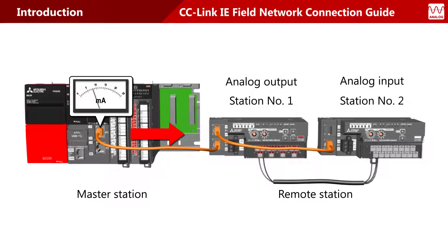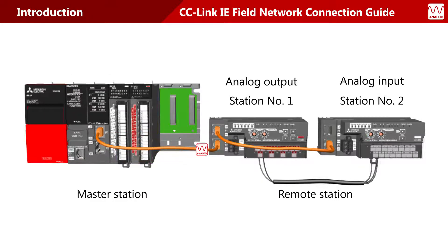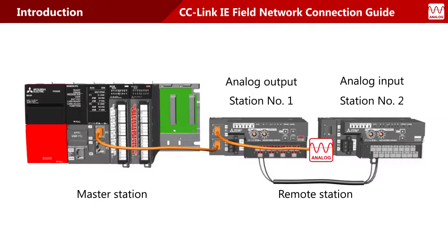When the master station sends an instruction to station number 1 to output an analog signal, the specified value is sent to the analog output module via the network. The analog output module sends the analog signal to the analog input module, and the analog input module returns the input value to the master station.